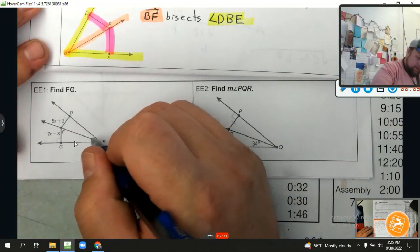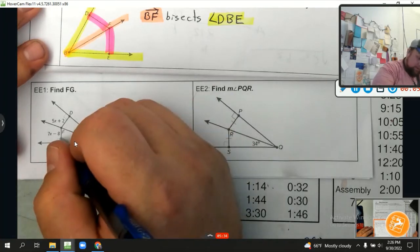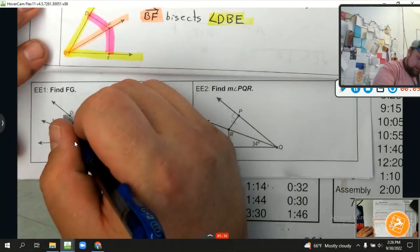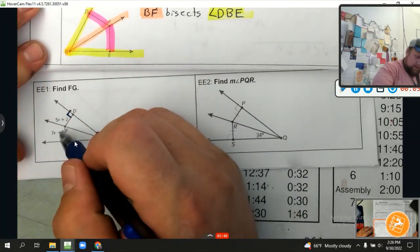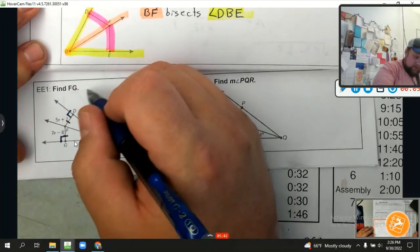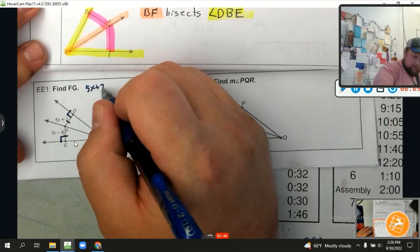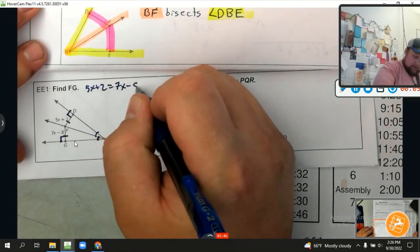Okay, we're already told this is an angle bisector because these angles are marked as the same. We're told these are perpendicular. If that's so, by Theorem 6.4, we know that these two sides are equal to each other. So let's do it: 5x plus 2 equals 7x minus 8. It's that simple.